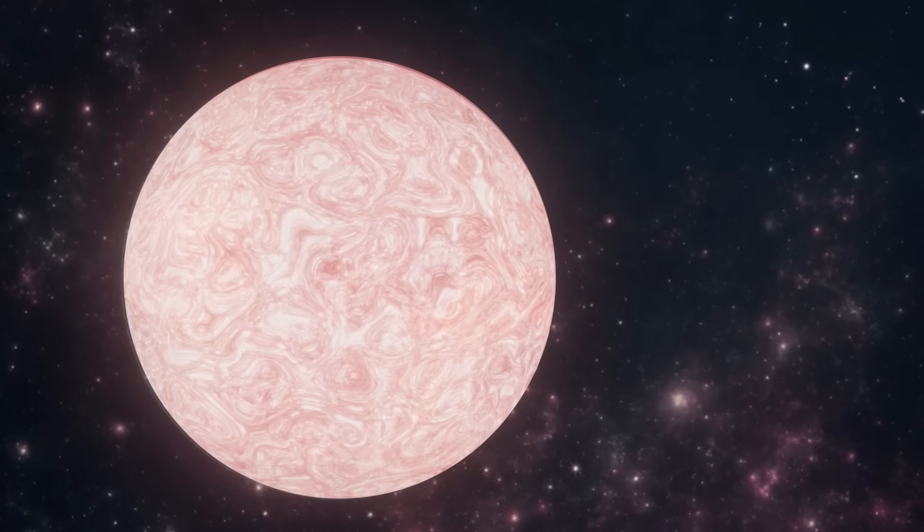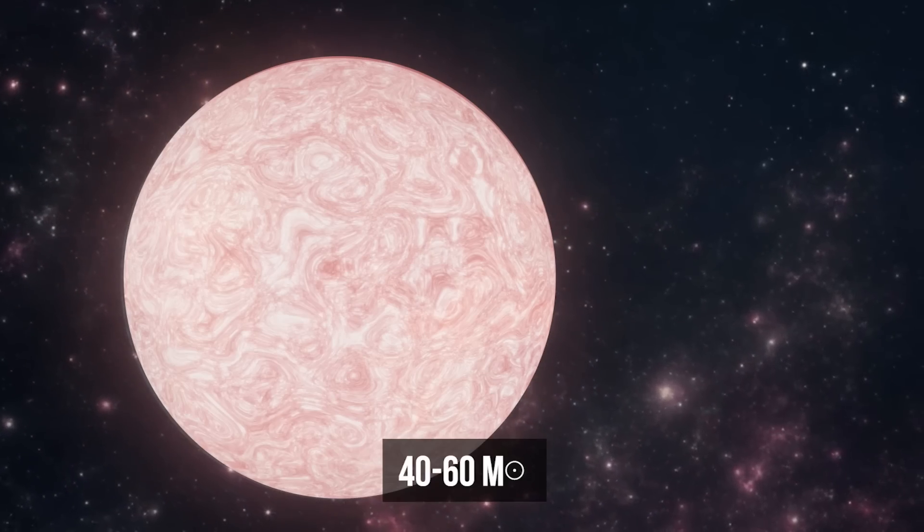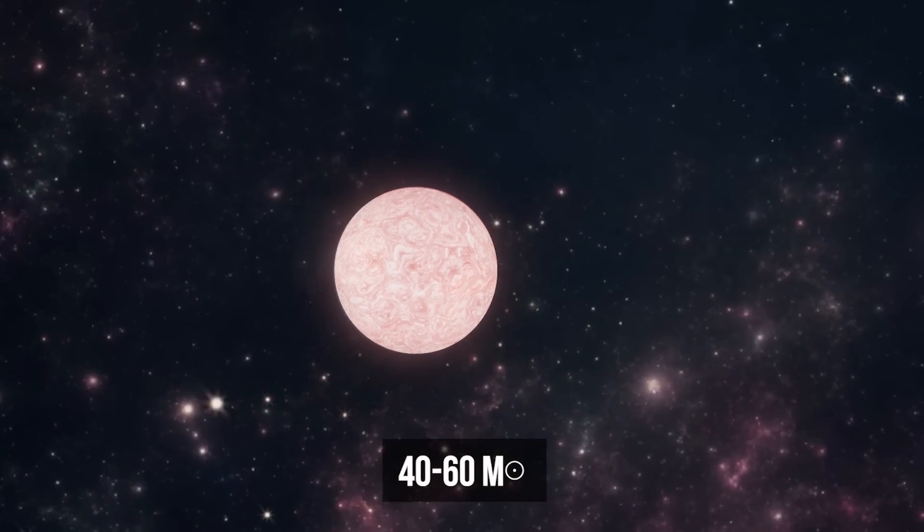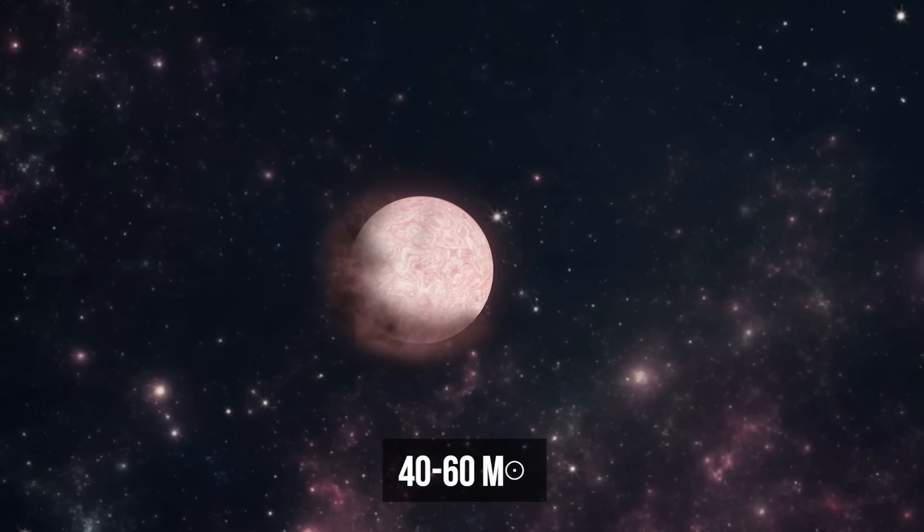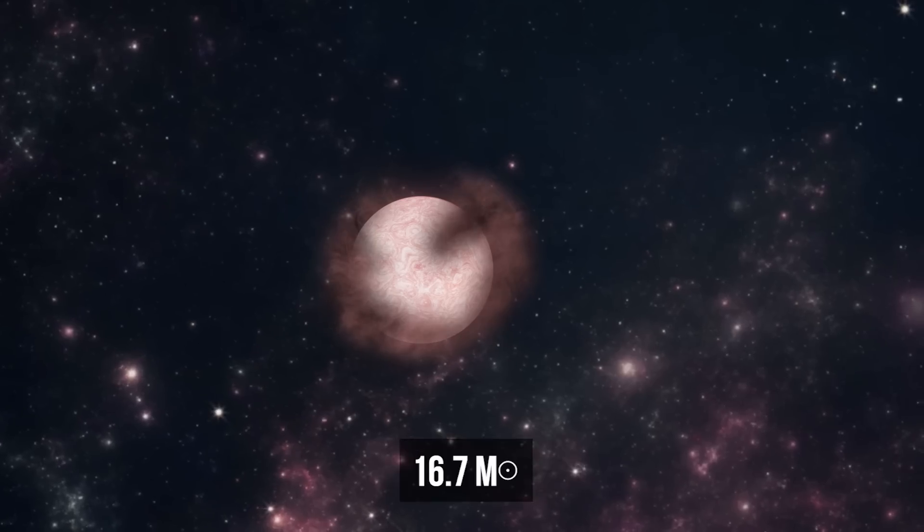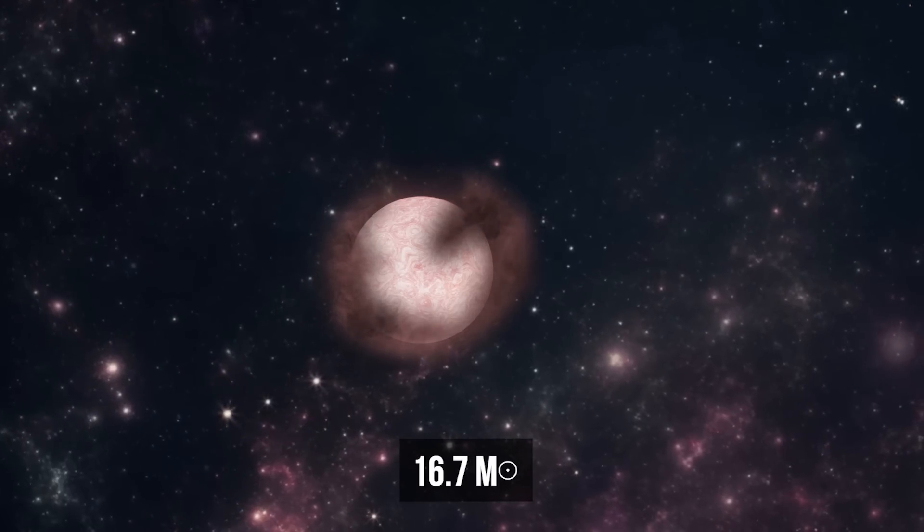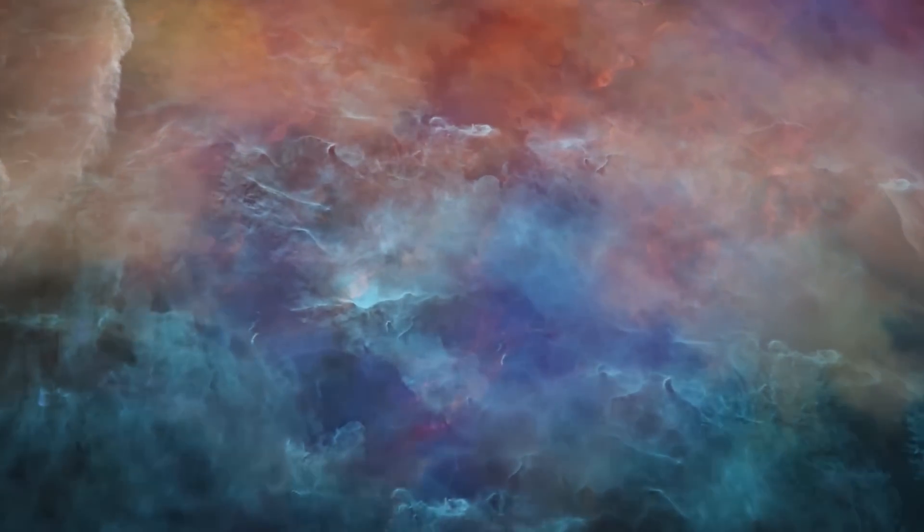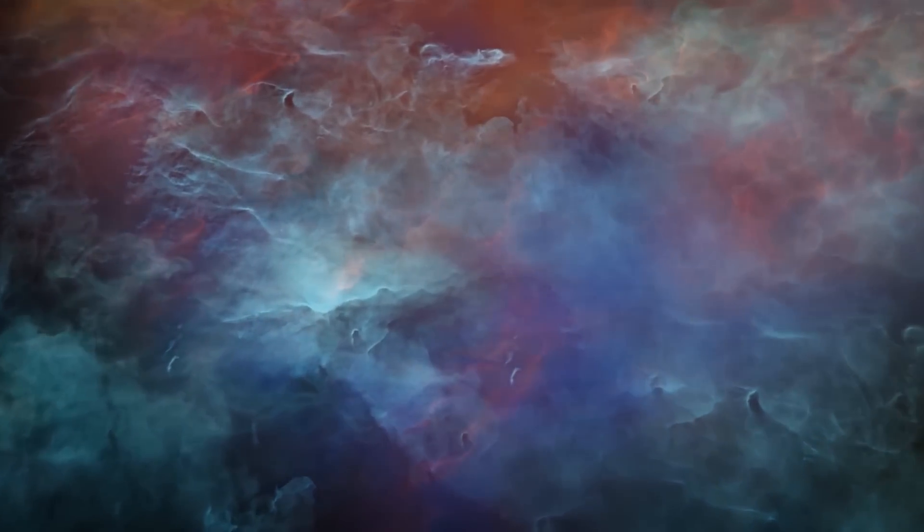WR102 used to be a giant star of around 40 or 60 solar masses. To date, it's run out of most of its fuel and now weighs a bit more than 16 of our Suns. Scientists have calculated that WR102 will explode and become a supernova in 1.5 to 2,000 years from now.